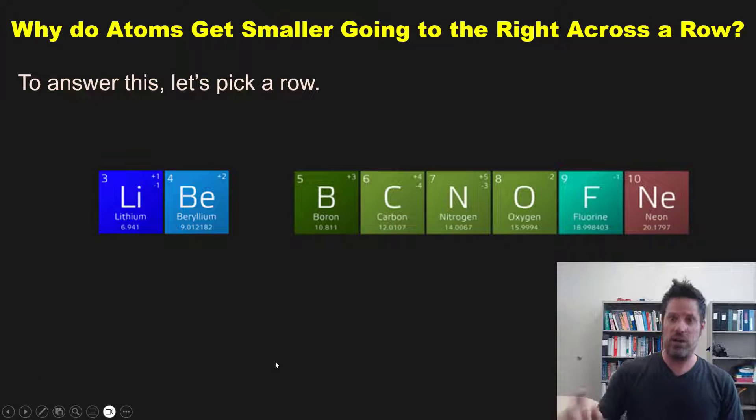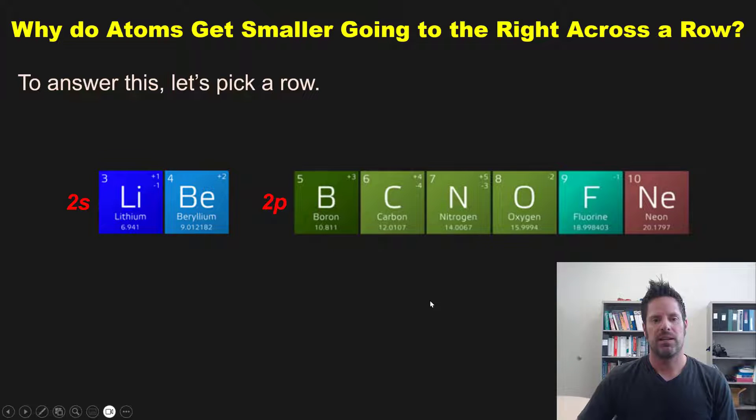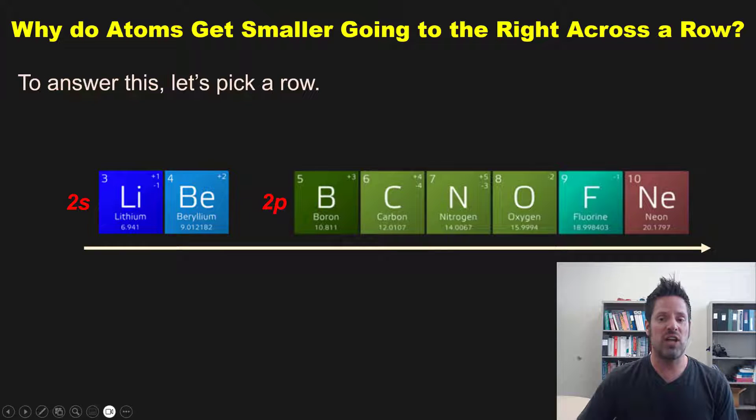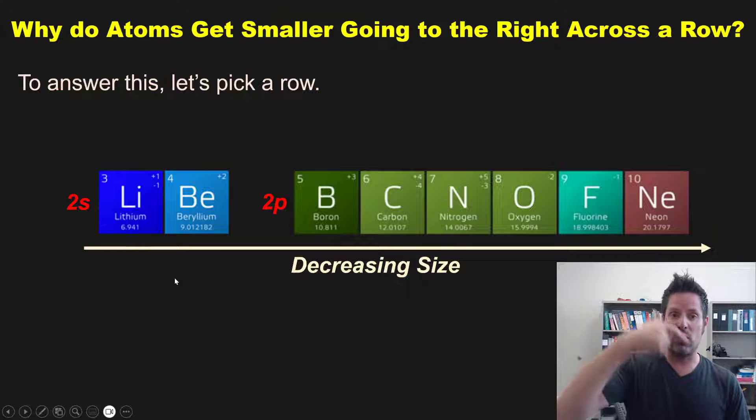You'll notice, drawing on your electron configuration knowledge, that the outermost filled orbital for lithium and beryllium is 2s, and the outermost filled orbitals for boron through neon are 2p orbitals. As I just pointed out, as you go left to right across a row, the size of these atoms gets smaller.